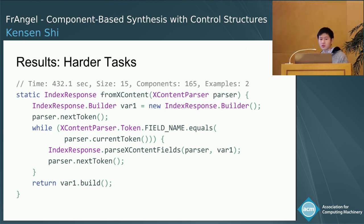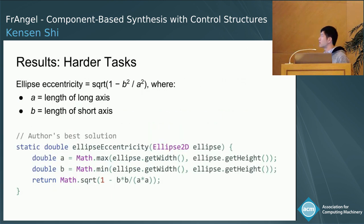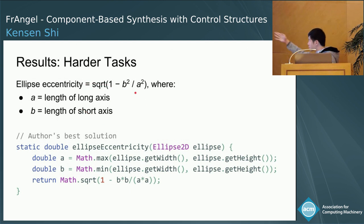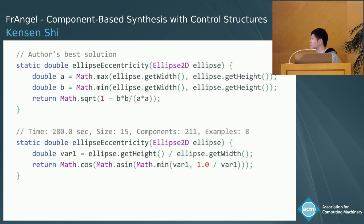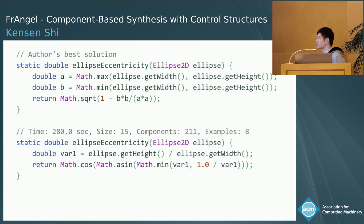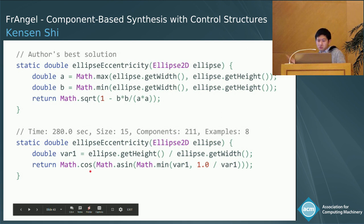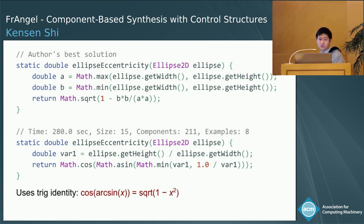In this task, we want to compute the eccentricity of an ellipse, involving finding the lengths of the long and short axes and plugging into a formula. I wrote this benchmark, and when I tried to solve it, I noticed some code duplication but whenever I tried to remove it, the code became longer overall—I truly thought my solution was the shortest possible. Here's a comparison between my solution and Frangel's solution. At first glance it's not clear what Frangel is doing—why is there a cosine? It turns out Frangel is actually applying a trigonometric identity, and by applying this manipulation the code just becomes so much simpler. Indeed, in this case, Frangel's code is better than mine.